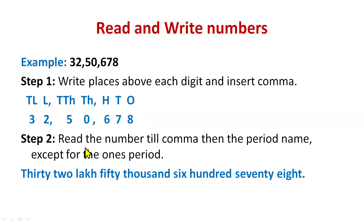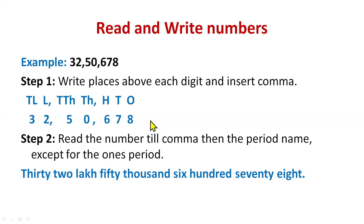Now second step: read the number till each comma. So this part is thirty two — then you write lakh, fifty thousand, and then six hundred seventy eight. There is one exception: you will not say the ones period name. You say lakhs here, you say thousands here, but you do not say ones. So how do we read this number? Thirty two lakh fifty thousand six hundred seventy eight.